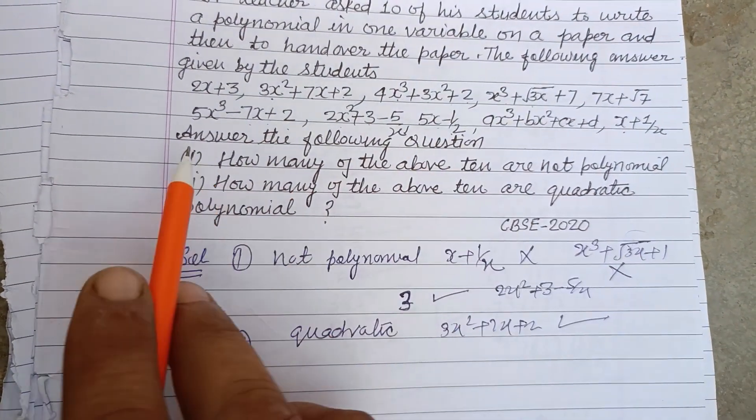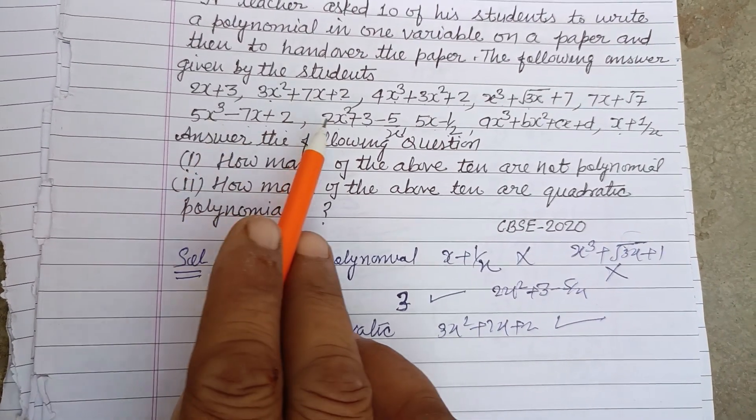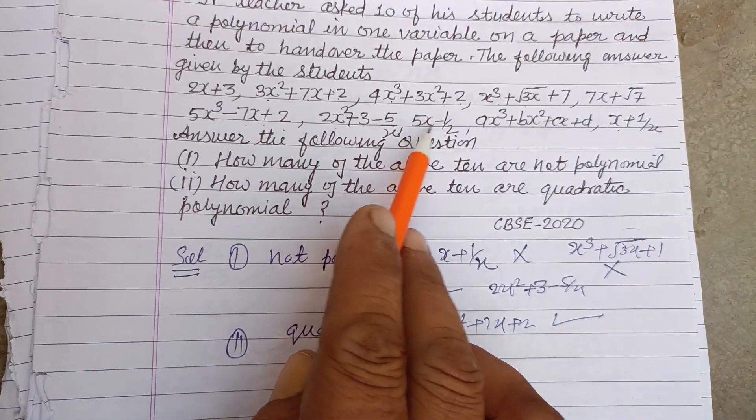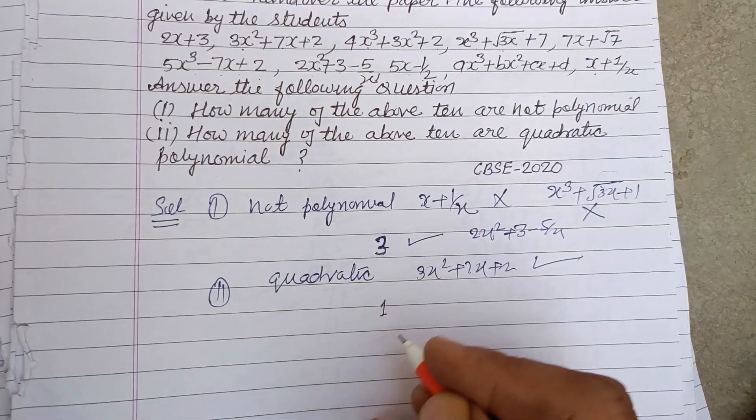One is quadratic polynomial, which is 3x² + 7x + 2. This is cubic, this is not polynomial, this is linear, this is cubic, okay. So only one is quadratic polynomial in this case.